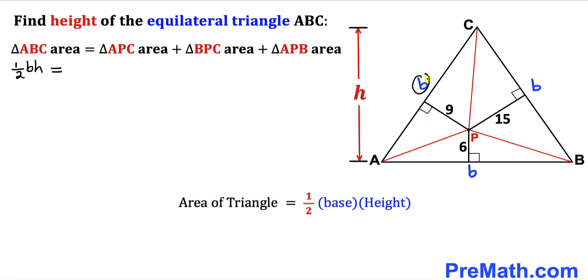Its base is b and the height is 9. Therefore the area of this triangle APC is going to be a half times b and height is 9.